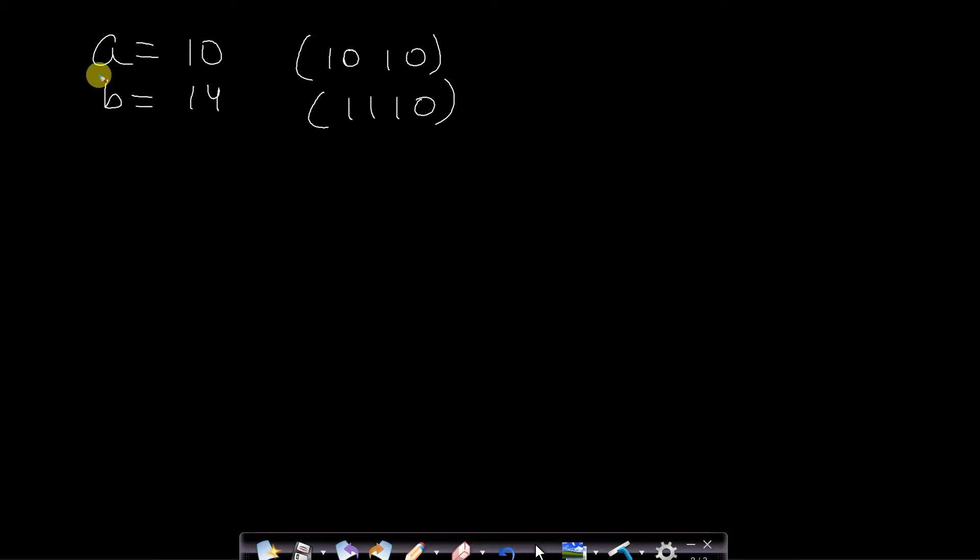Let us assume that you are given just two numbers A and B. Here I have taken A as 10 and B as 14. Then how will you find the rightmost different bit between these two numbers?